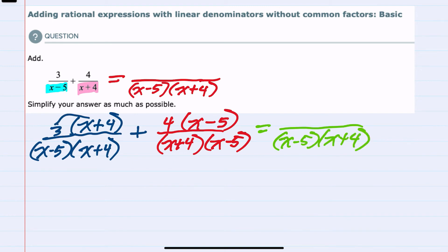Distributing the 3 in the first term here, we would have 3 times x is 3x, and 3 times 4 is 12. And then, for the second term, that's a positive 4 times x plus 4x, and 4 times minus 5 is minus 20.